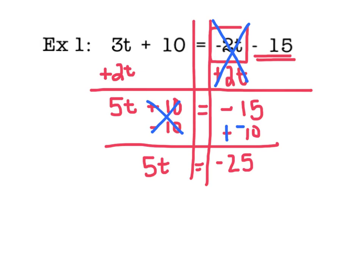I've got one more inverse operation. That's going to be divide by 5. I'll do that on both sides. My inverse operations cancel out, leaving me with t by itself. And negative 25 divided by 5 is negative 5. And there's our answer.